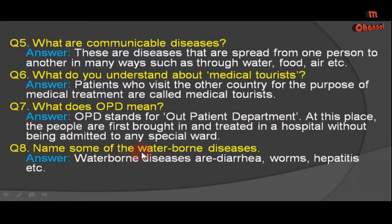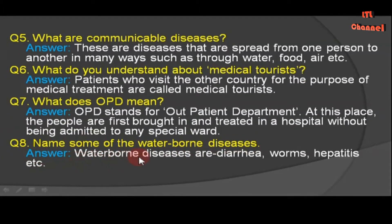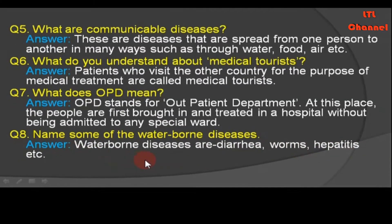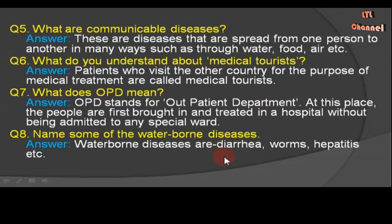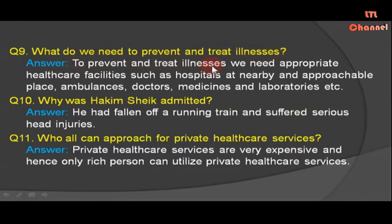Question number eight: Name some of the waterborne diseases. Answer: Waterborne diseases include diarrhea, worms, hepatitis, etc. Question number nine: What do we need to prevent and treat illness? Answer: To prevent and treat illness, we need appropriate health care facilities.